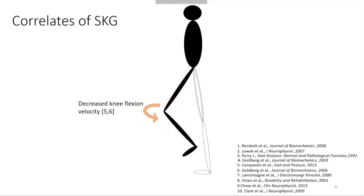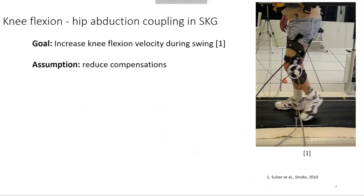Muscle co-contractions and co-activations between knee extensors and ankle plantar flexors prior to swing, and reduced amount of coordinated muscle activities, were related to the reduced knee flexion in post-stroke gait as well. From an engineering point of view, the reduced knee flexion velocity can be improved using a robotic assistive device capable of providing knee flexion torque prior to the swing phase. This idea was applied in a previous study where knee flexion velocity was increased during swing by providing knee flexion torque with an externally actuated knee brace.